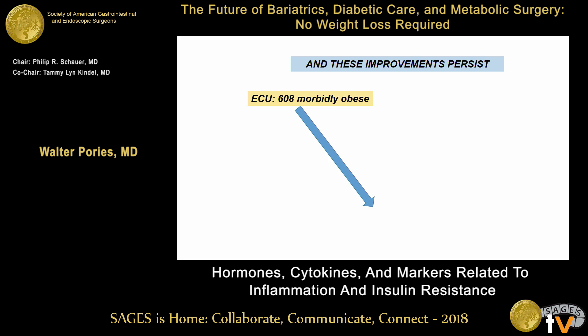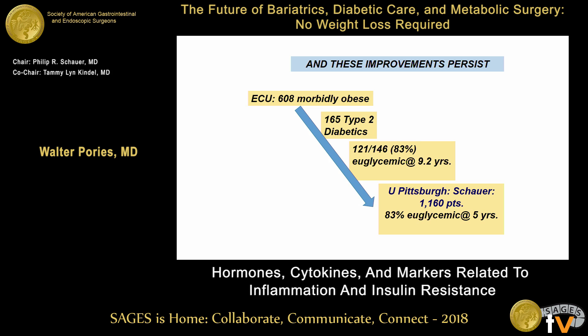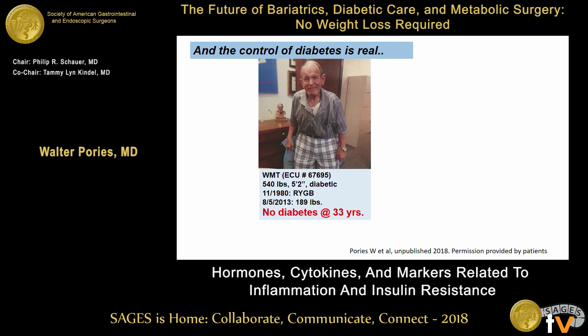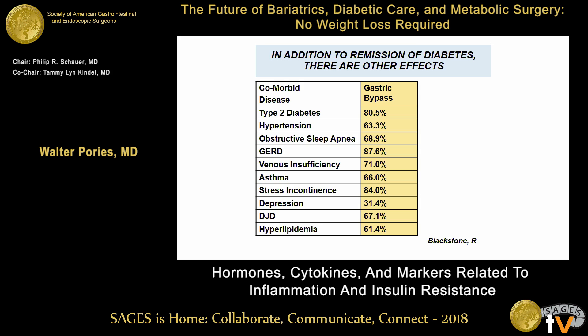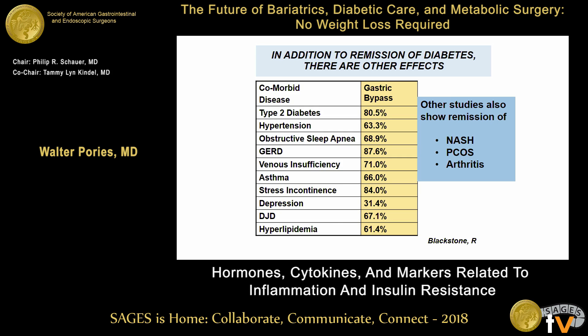In our own series of 608 morbidly obese patients, we had 165 patients with diabetes, and 83% were still euglycemic at 9.2 years. Then there was Schauer — in 1,160 patients, he also got 83% corroboration. A patient I operated on 33 years ago with severe diabetes is still euglycemic. Here's another patient, 32 years later, also still free of diabetes. Both of them are in their 70s.